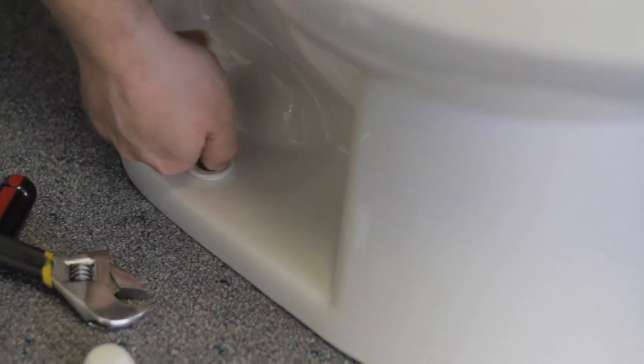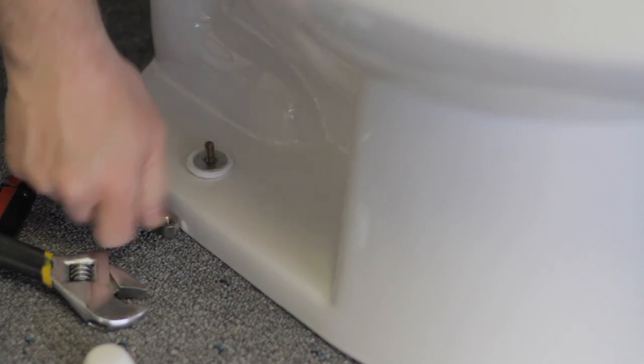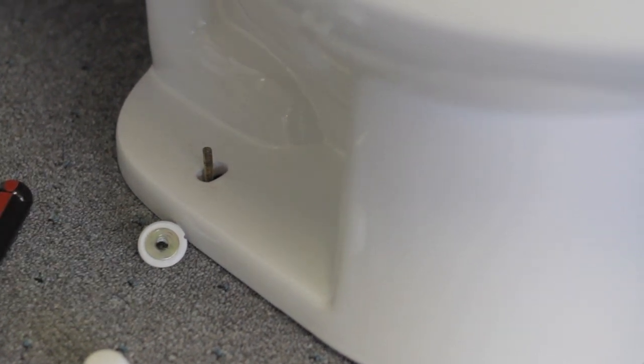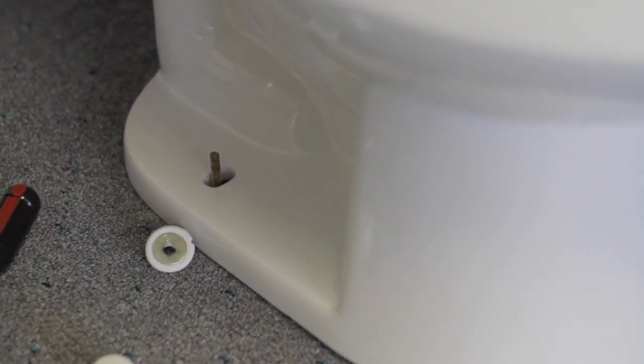At this time you'll want to make sure that the water is turned off and you can take your wrench or pliers and undo the water supply.